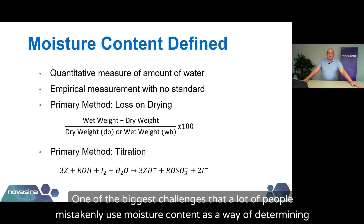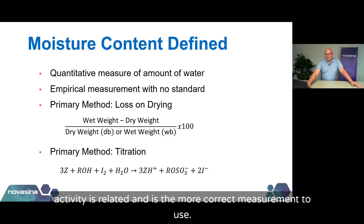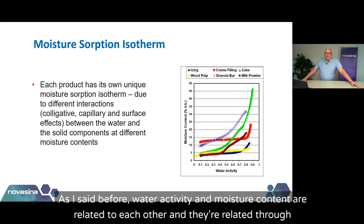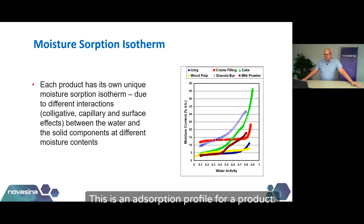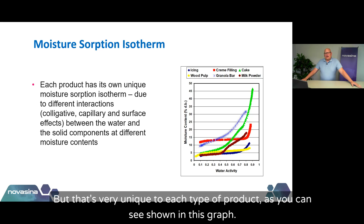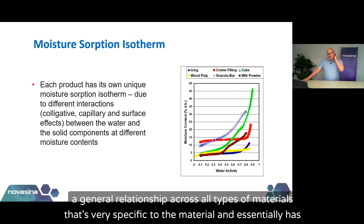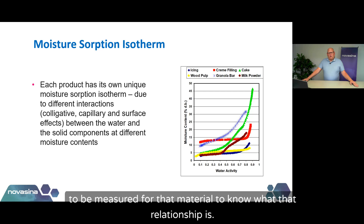One of the biggest challenges is that a lot of people mistakenly use moisture content as a way of determining safety of a product, when in reality it's not reliably related to safety or quality — whereas water activity is. Water activity and moisture content are related through something called the moisture absorption isotherm. As water activity increases, there is a subsequent change in moisture content and vice versa. But that relationship is very unique to each type of product — each product has a unique isotherm shape, so it's not a general relationship. It has to be measured for that specific material.